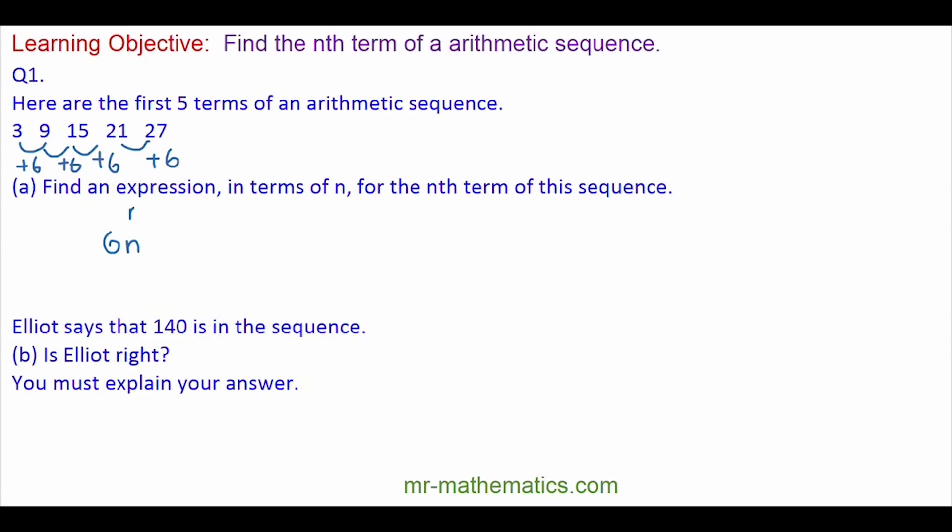This means the sequence will have to do with the 6 times tables. So 1 times 6 is 6, 2 times 6 is 12 and so on. So we are multiplying the position of each number in the sequence by 6.